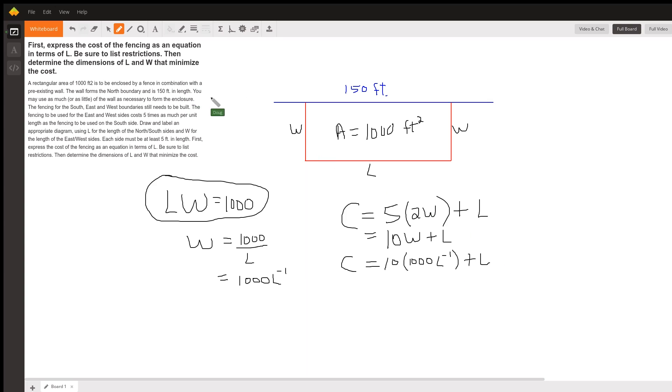Now, we were told to list the restrictions on the different variables. We know that L has to be at least five feet long. So we could say something like this about L.